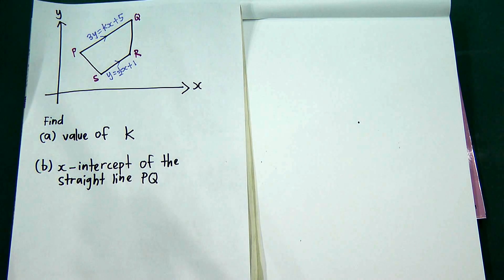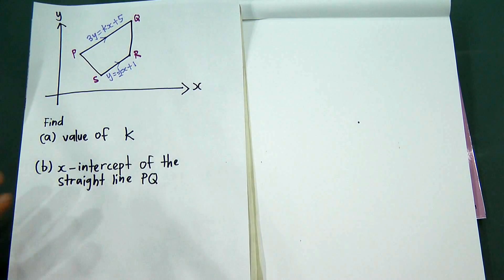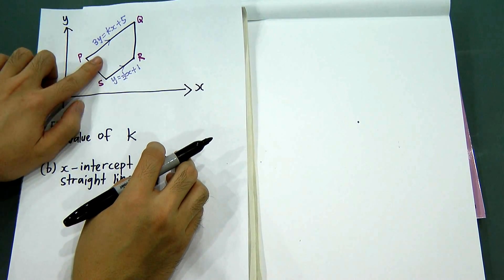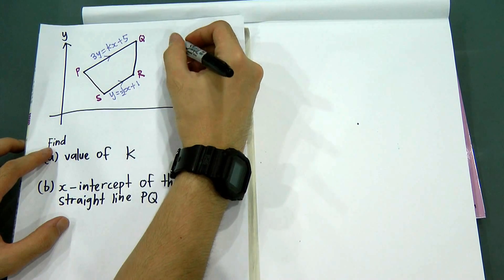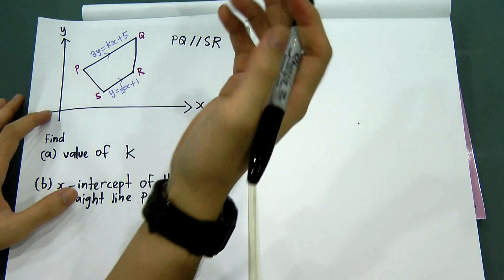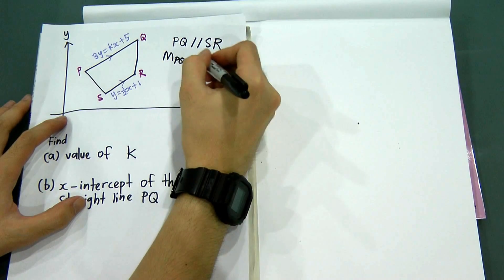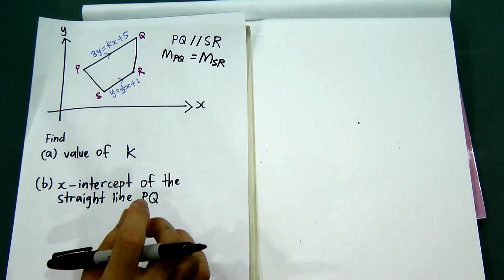After that video, let's have a look at some simple questions. This is one of the past year questions. When you see this diagram, you will see two symbols like this. These symbols represent that PQ is parallel with SR. When both lines are parallel, the gradient for PQ will be the same as the gradient for SR.